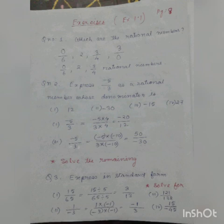Question number 2: Express minus 5 by 3 as a rational number whose denominator is 12, minus 30, minus 15, and 27.